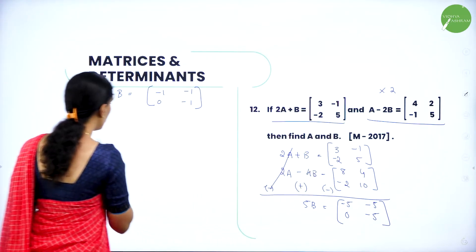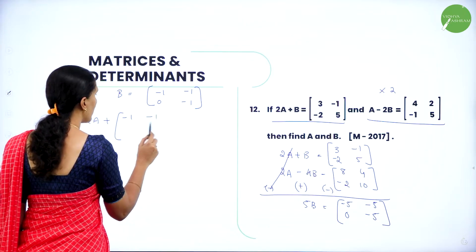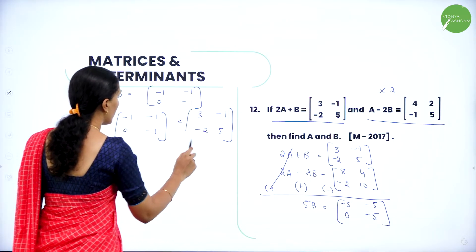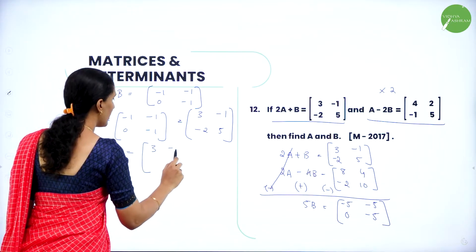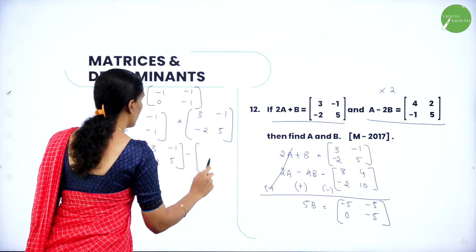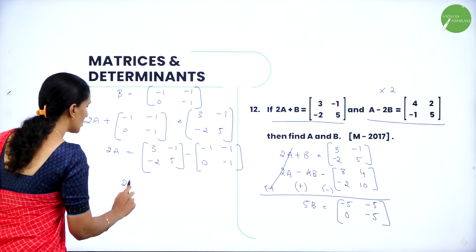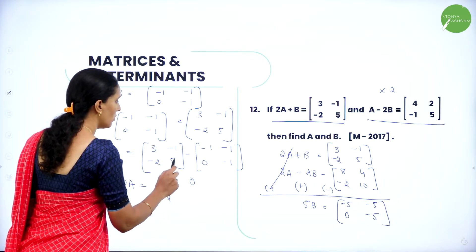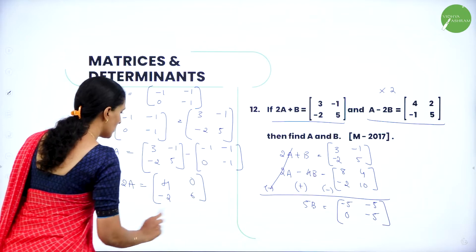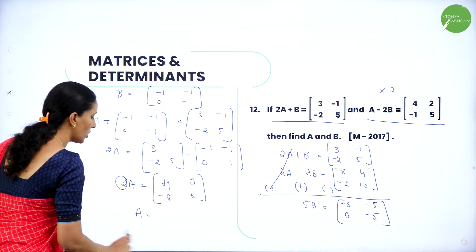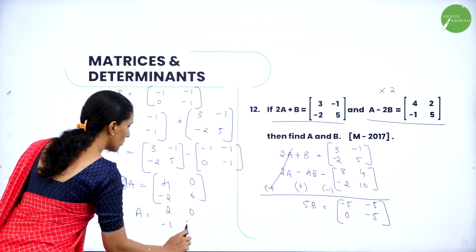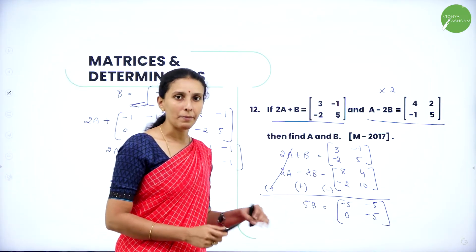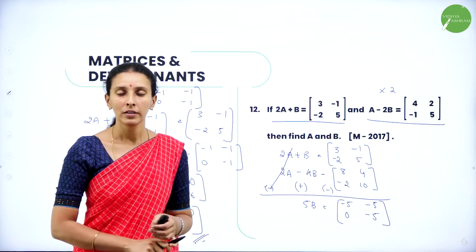Now using the first equation: 2A + B = [3, -1; -2, 5]. Substituting B = [-1, -1; 0, -1]: 2A = [3, -1; -2, 5] minus [-1, -1; 0, -1] = [4, 0; -2, 6]. Dividing by 2: A = [2, 0; -1, 3]. So this is matrix A and matrix B. We solved it like a simultaneous linear equation to get the values of the matrices.